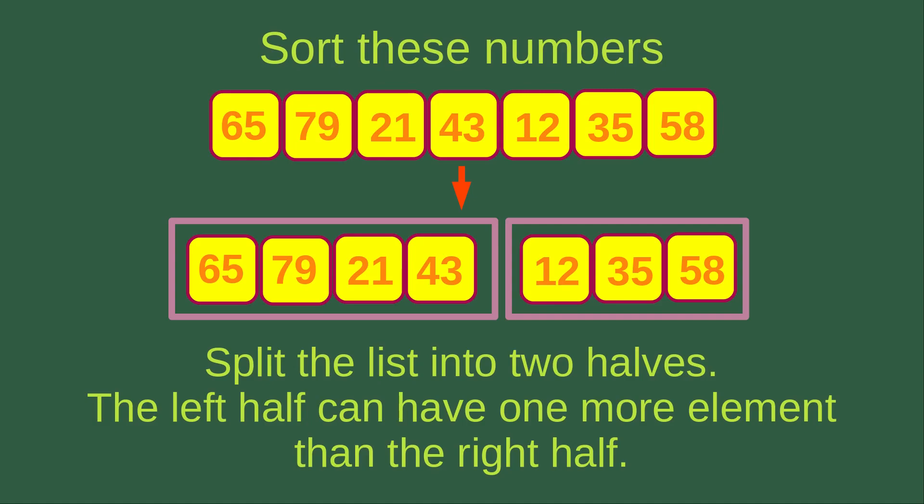The splitting mechanism is that we can maintain the first half having one more element than the right half. So the left side here has four elements, and the right side has three elements.